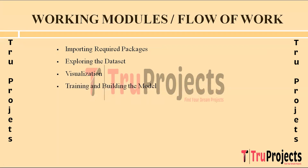The next step is training and building the model. Here we train and build deep learning models including MobileNet, MobileNetV2, CNN, and Xception using the pre-processed image data. These models are designed to learn features and patterns from the images to classify them into different herb types.